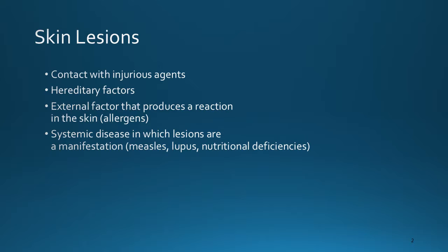Skin lesions can be caused by contact with injurious agents, hereditary factors, external factors that produce a reaction in the skin such as from allergens, and systemic disease in which lesions are a manifestation of that disease. Examples would be measles, lupus, or nutritional deficiencies.